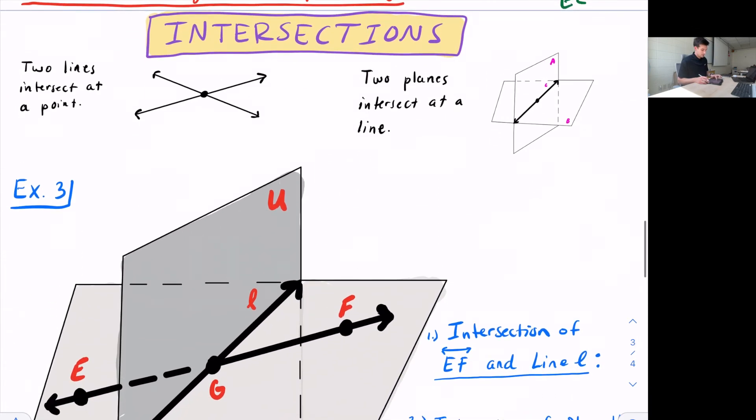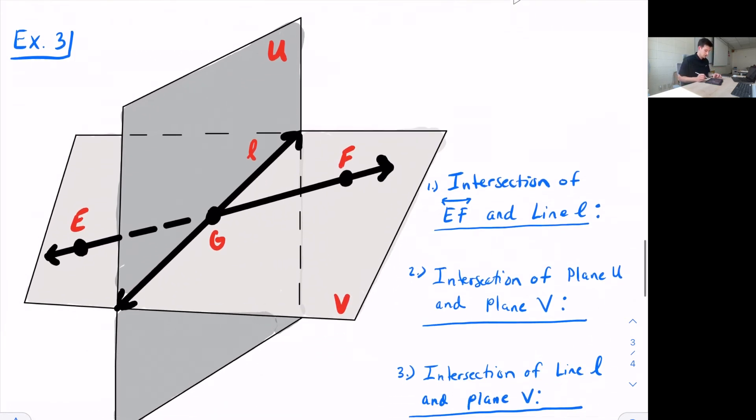The last thing we're going to look at is intersections. So we just looked at a diagram where we had two lines that intersected, and they intersected at a point. So that's important to note. Two lines intersect at a point. And now we're going to look at what happens when two planes intersect. So two planes intersect at a line.